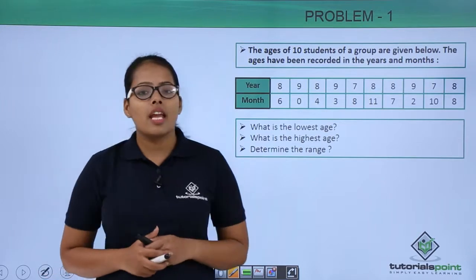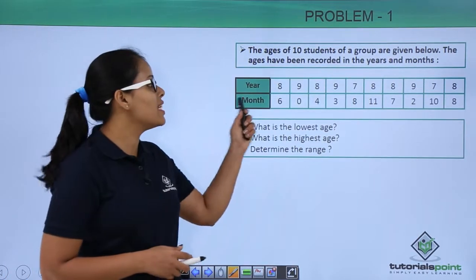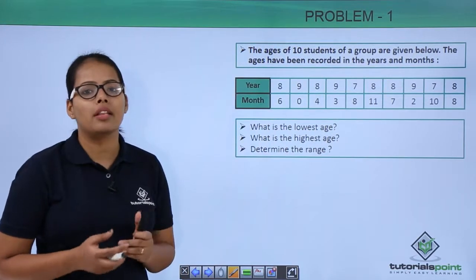So our problem says the ages of 10 students of a group are given below. You can see this table here. These ages are represented in the form of years and months.